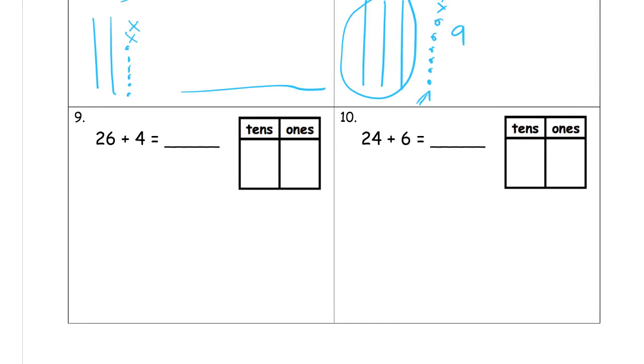So we need 26 plus 4: 10, 20, 1, 2, 3, 4, 5, 6. And then we need 4 more: 7, 8, 9, 10. And that makes a 10. So the 26 was 20 and 6. You can see from our picture we have 3 tens but we don't have any more ones. So that's 30.